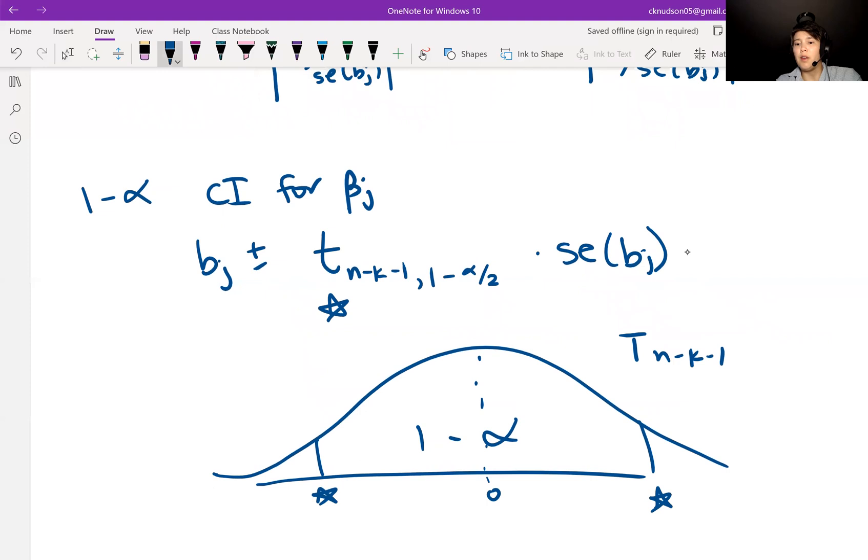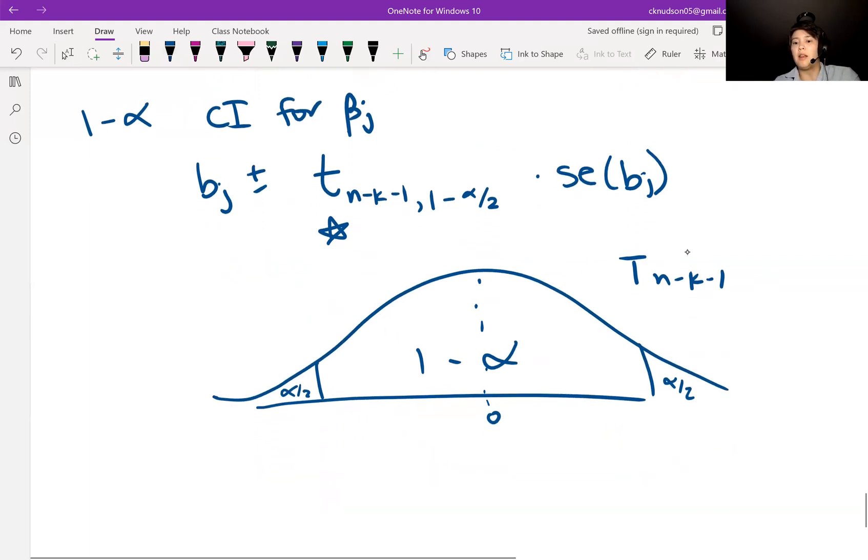So that we have alpha over two in each tail. We might get something like positive 2.21 and then negative 2.21.